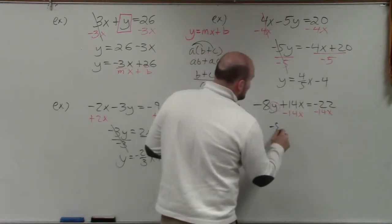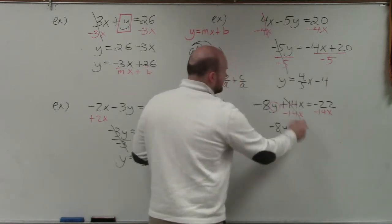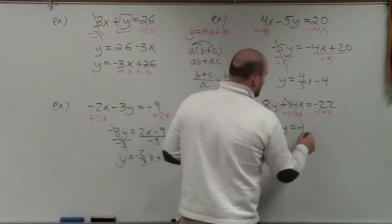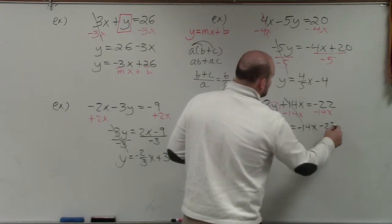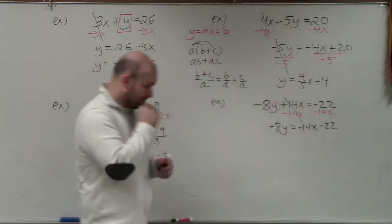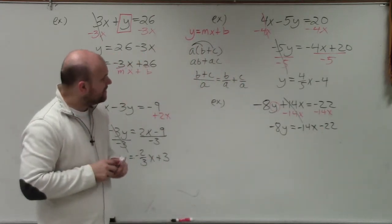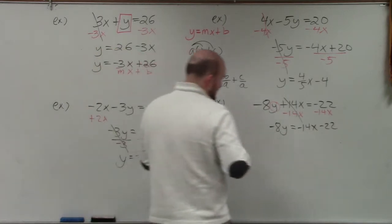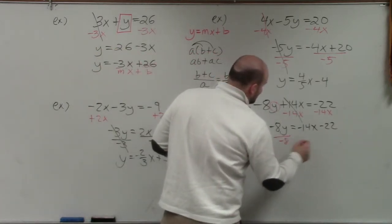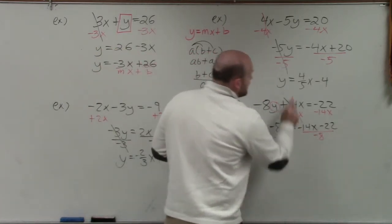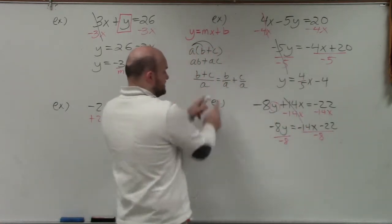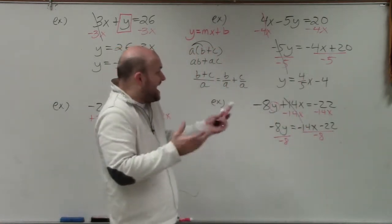That's going to leave me with a negative 8y is equal to, that goes to 0, negative 14x minus 22. Now, I need to undo multiplying by negative 8. So I'm going to divide by negative 8. This negative 8 is going to divide into both of those terms, but it doesn't divide into any term evenly.